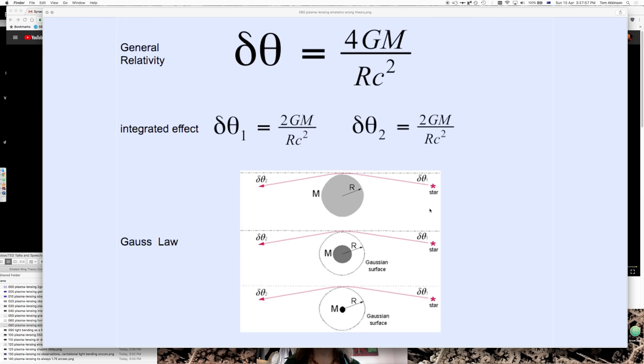The brother knows the theory. Actually, this is pretty easy to get your head around. Einstein's theory for GM over RC squared basically says if you shrink a sun down into a little dot, it'll still bend the light the same. It doesn't matter how big it is. But that's wrong.